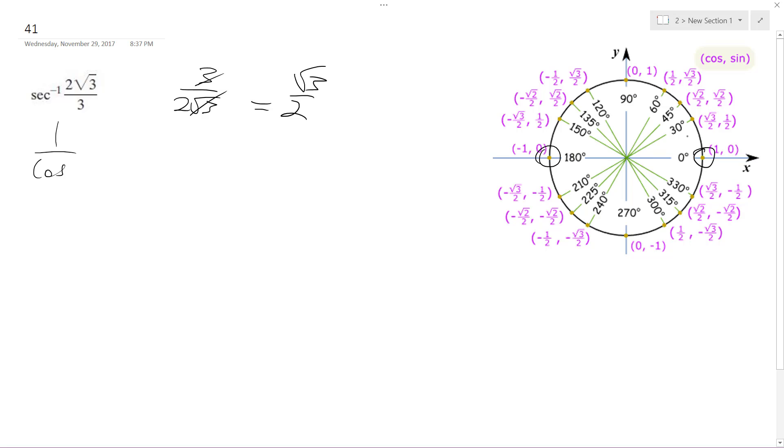So where does cosine equal root 3 over 2, and therefore the secant? Because the secant's going to be 2 over root 3, and then we've got to rationalize it. So this is pi, the 30 degrees, or pi over 6.